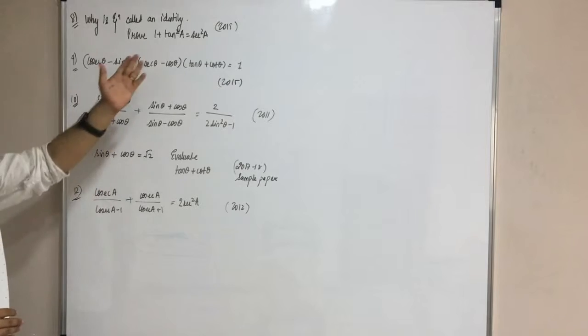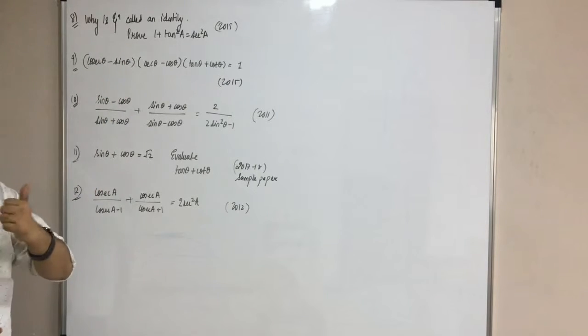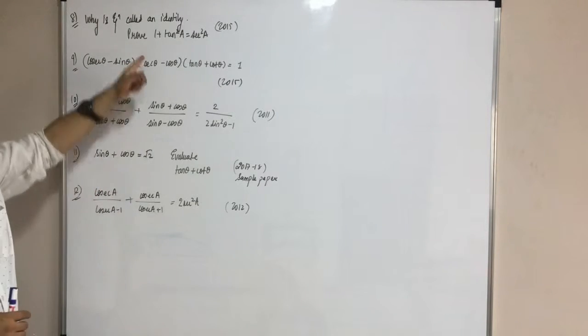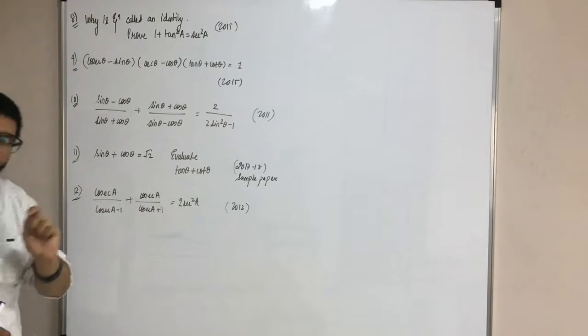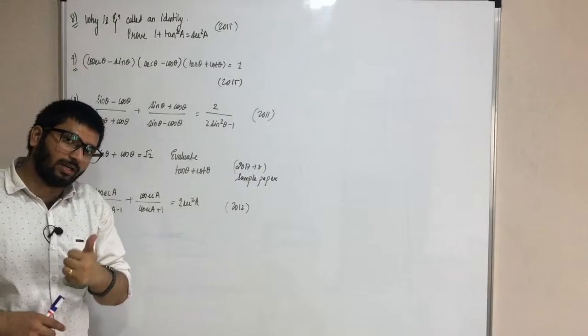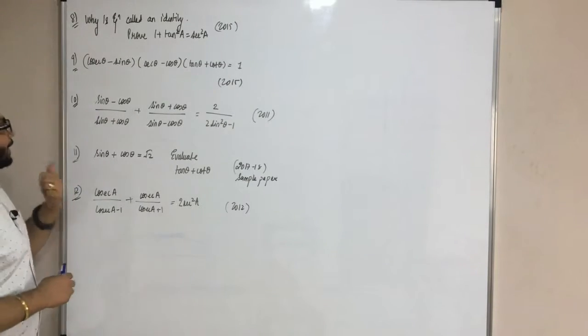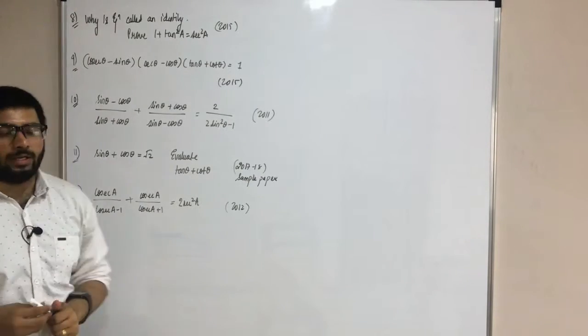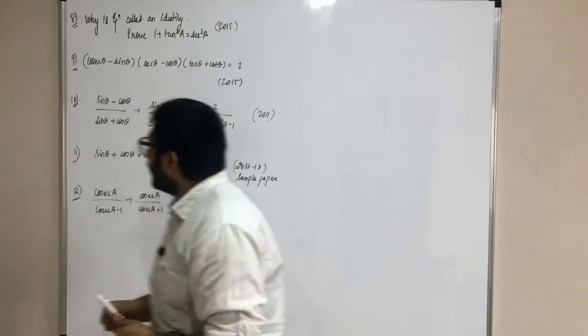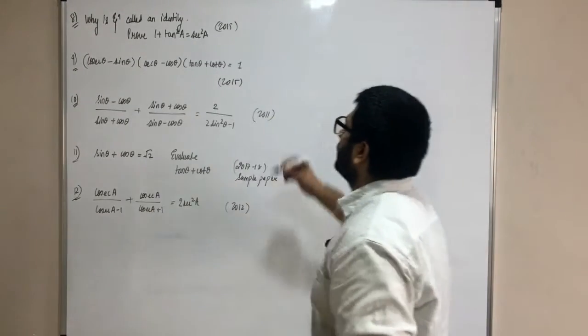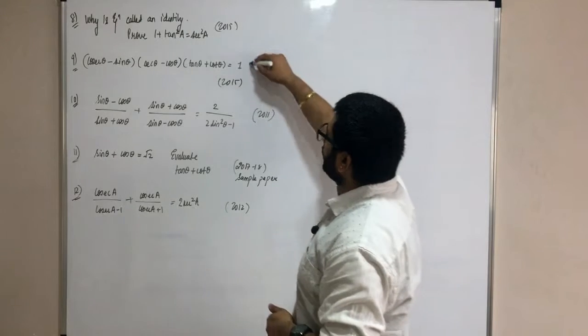Now you have to prove it. So we have to question what an identity is. How will we prove it? You will go to the videos in the back. We will see the proof there. Now let's see the ninth question. What do you have to do in the ninth question? You have to do one proof.